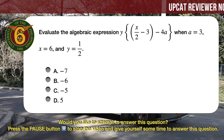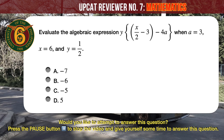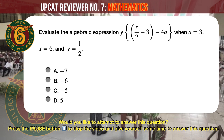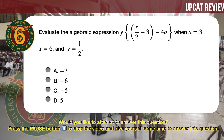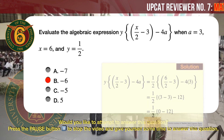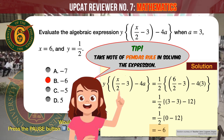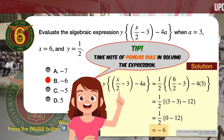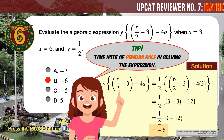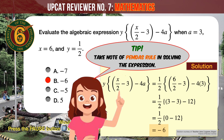Question number 6. Evaluate the algebraic expression y times the quantity [(x over 2 minus 3) minus 4a], when a equals 3, x equals 6, and y equals one half. A: minus 7. B: minus 6. C: minus 5. D: 5. The correct answer is B, minus 6. Substitute the values into the expression and apply the order of operations (PEMDAS). We get one half times [(6/2 minus 3) minus 4 times 3] which simplifies to one half times [3 minus 3 minus 12], arriving at minus 6.